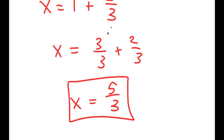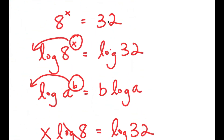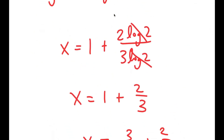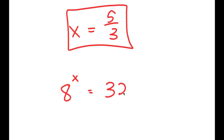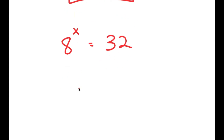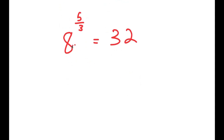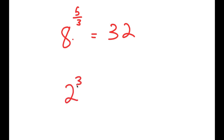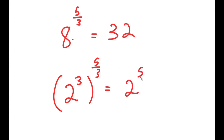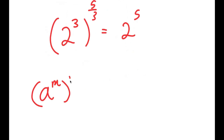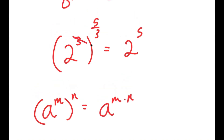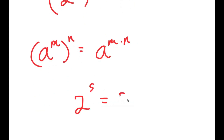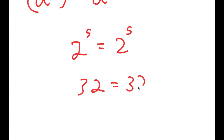Now, how do we know that this is the right answer? Going back, we have 8 to the power of x equals 32, and we're plugging in 5 over 3. So we get 8 to the power of 5 over 3 is equal to 32. Since 8 is the same thing as 2 to the power of 3, I get 2 to the power of 3 to the power of 5 over 3, which is equal to 2 to the power of 5. Since a to the power of m to the power of n equals a to the power of m times n, these two 3s cancel out, giving 2 to the power of 5 equals 2 to the power of 5, or 32 equals 32. This is right.